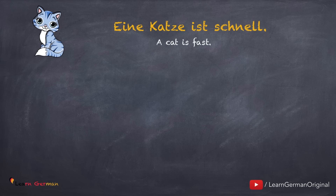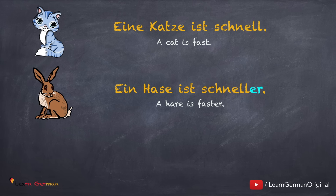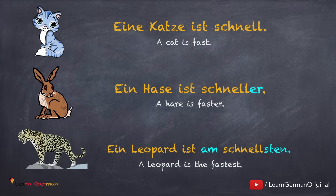Jetzt schauen wir uns ein paar Beispiele an. Eine Katze ist schnell — das Adjektiv 'schnell' ist in Positivform. Ein Hase ist schneller — in dem Komparativ schreibt man 'schneller'. Und ein Leopard ist am schnellsten — die Superlativform ist 'am schnellsten'.